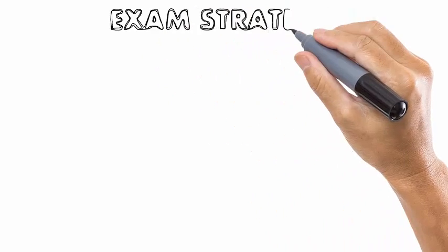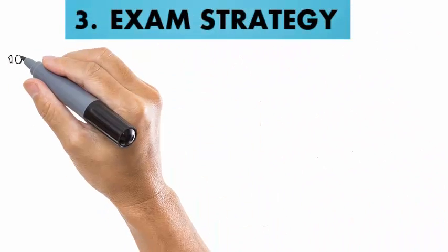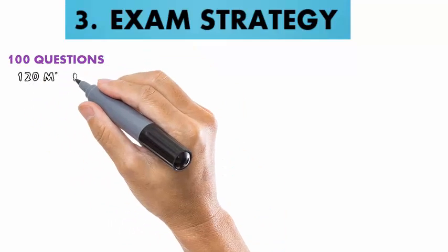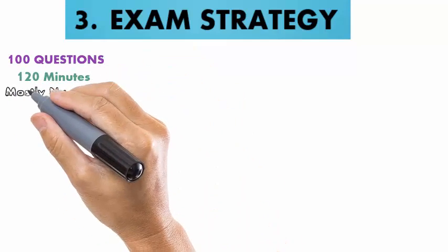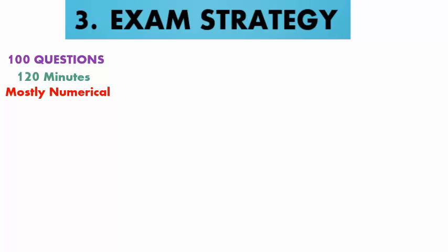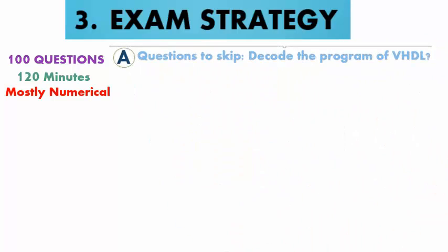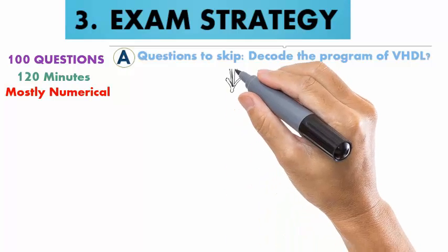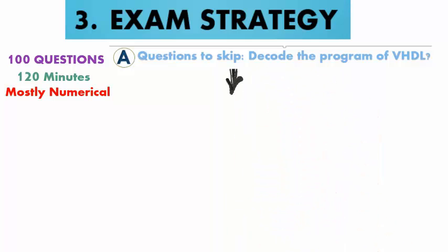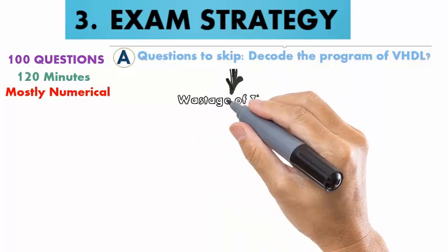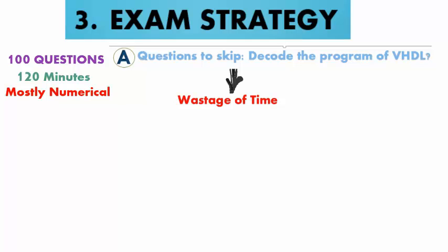The strategy for this exam will be completely different from GATE and IES. There will be 100 questions, mostly of numerical approach, which have to be solved in 2 hours. First tip: many of you will encounter VHDL or Computer questions at the very start of the paper — just skip them completely and move to the next questions. Do not even try to read them, as VHDL questions will be very lengthy and made to waste your time only. You can try them at last if you get time.